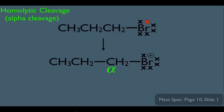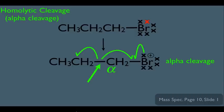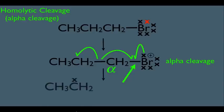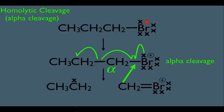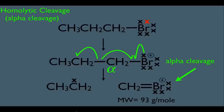The electron movement for alpha cleavage shows the bond connected to the alpha carbon being broken — the bond on the other side of the alpha carbon from the halogen. Simultaneously, a new double bond forms between the alpha carbon and the Br. The result is a charged fragment containing the alpha carbon doubly bonded to Br, plus a radical fragment. It is the charged fragment that is detected by the mass spec, so we should expect a peak at 93.